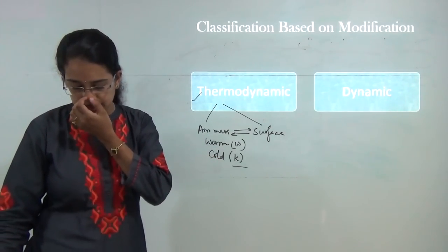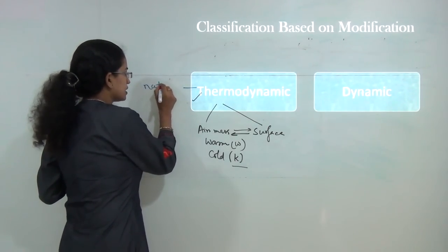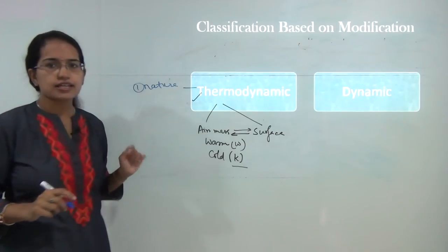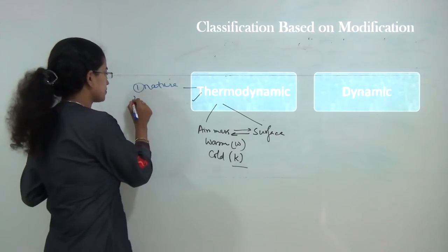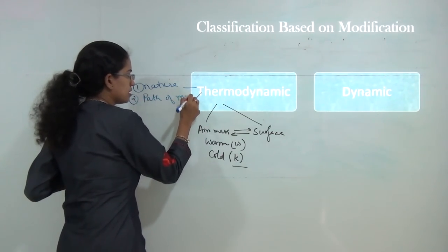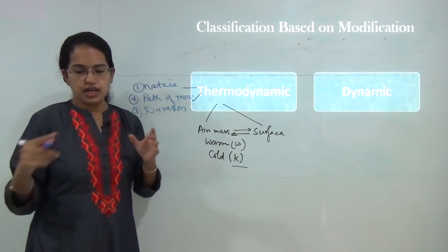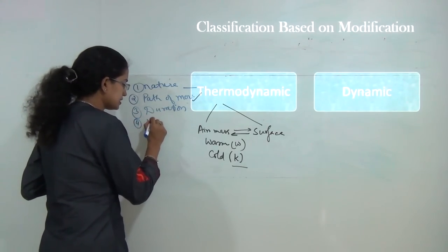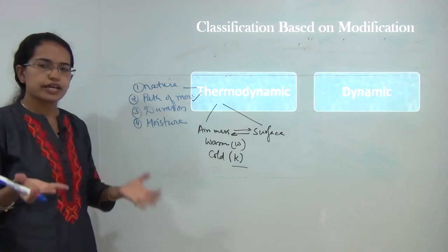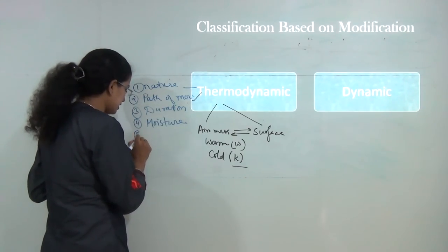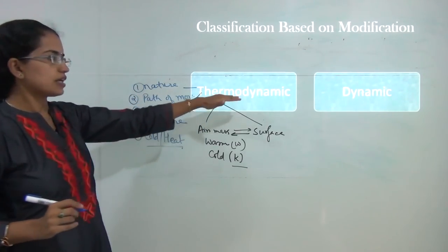Thermodynamic modification is determined by several factors: the nature of the underlying surface, the path of movement of air, the duration of movement, whether there is additional moisture in the region, and the amount of cooling or heating activity. All of these affect the thermodynamic modification of an air mass.